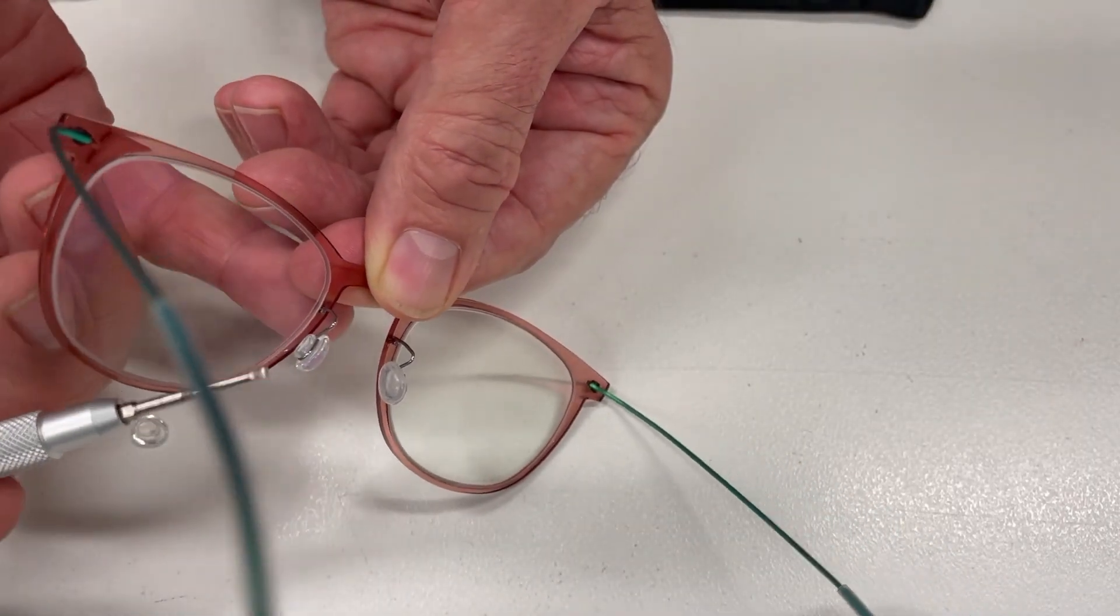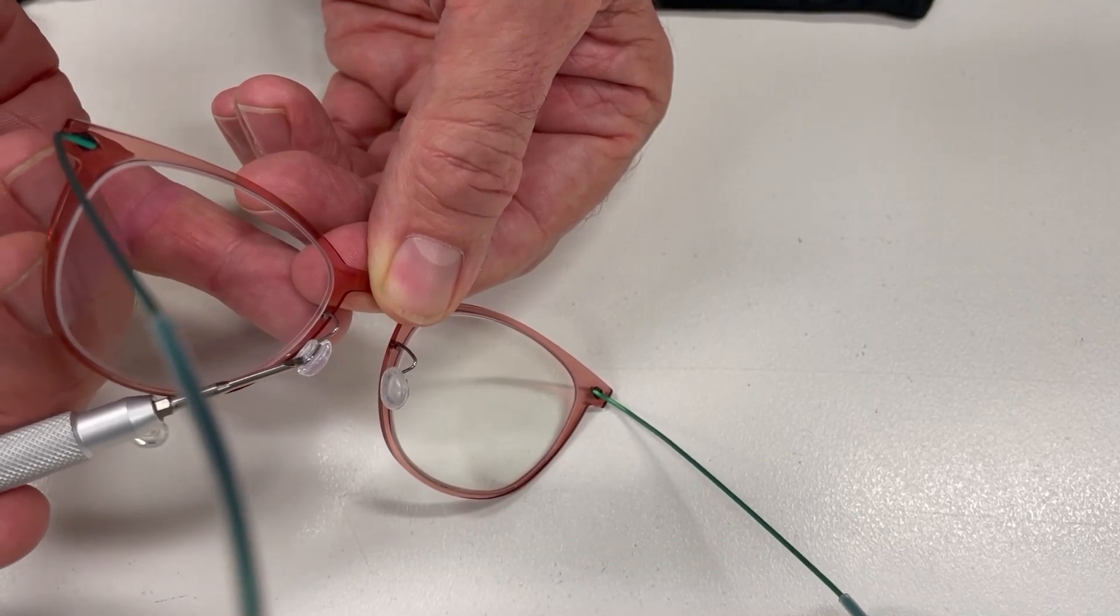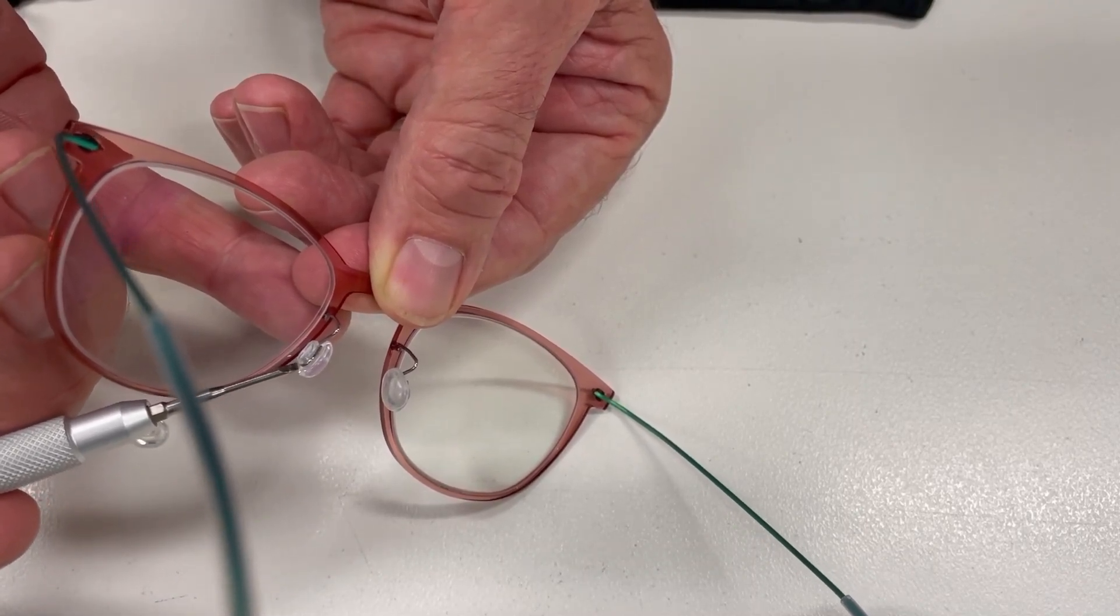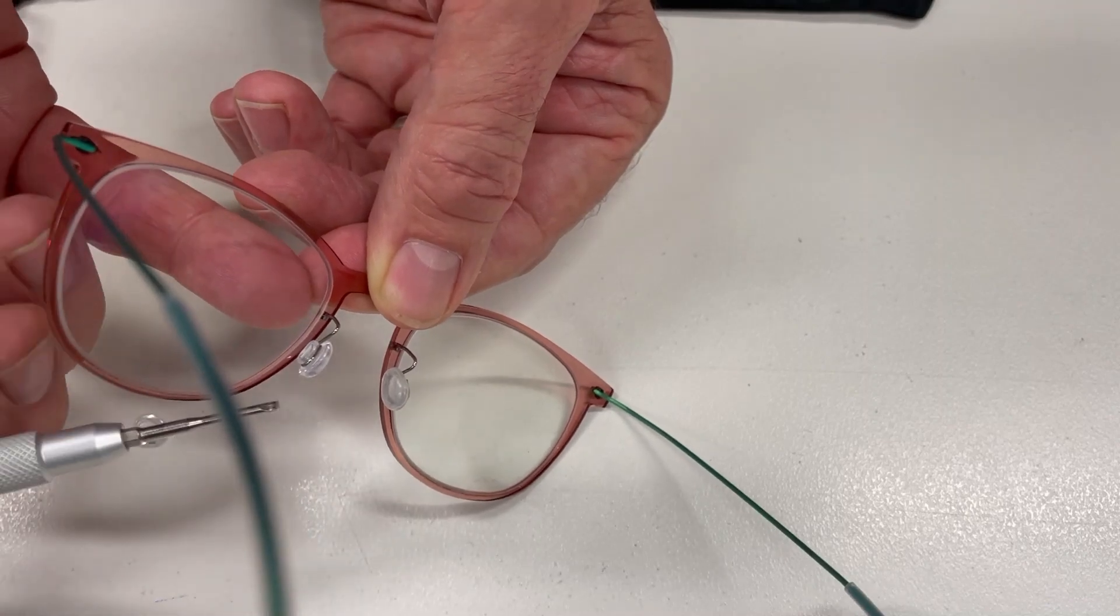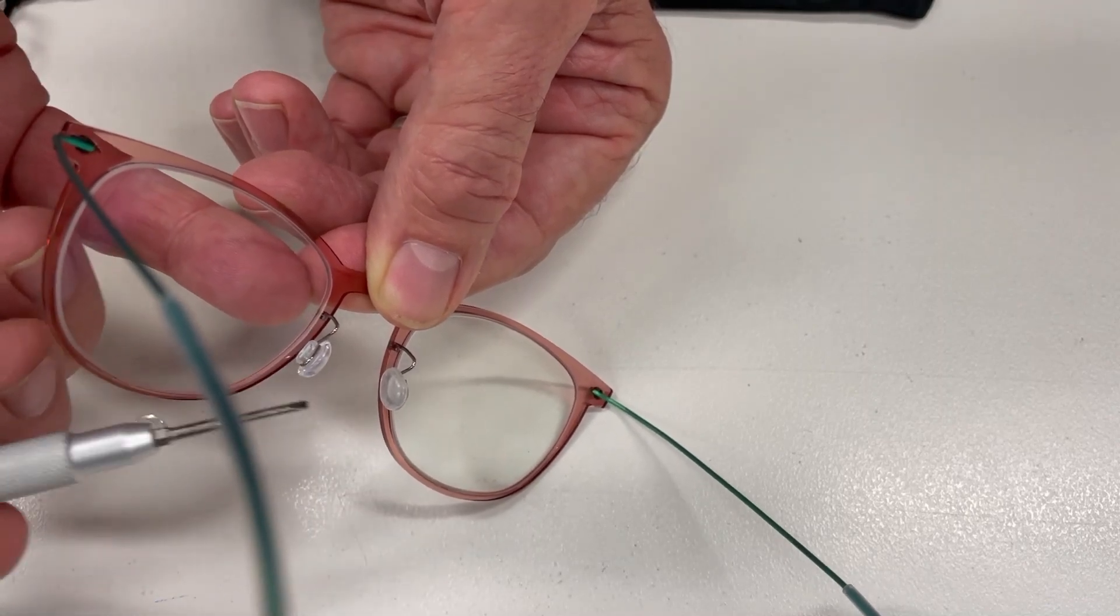Hey guys, Michael here from Visionary Parts. You can see this is a Lindbergh nose pad. They're a 7mm teardrop made out of silicon with a hard backing, and they sit in their little wire clamp.